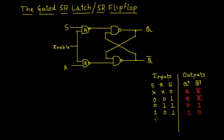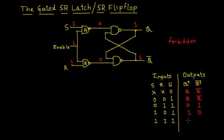Lastly we consider inputs S=1, R=1, and Enable=1. 1 NAND 1 results in 0, and similarly 1 NAND 1 results in 0. From the truth table of the NAND gate, the output of the upper NAND gate is going to be 1, and similarly the output of the lower NAND gate is also going to be 1. But we know that Q and Q bar are complements of each other — both cannot be high at the same time. Hence this set of inputs should be avoided; it is forbidden. I'll write this onto the truth table as Q-plus = 1* and Q-plus bar = 1*, meaning this state is forbidden.